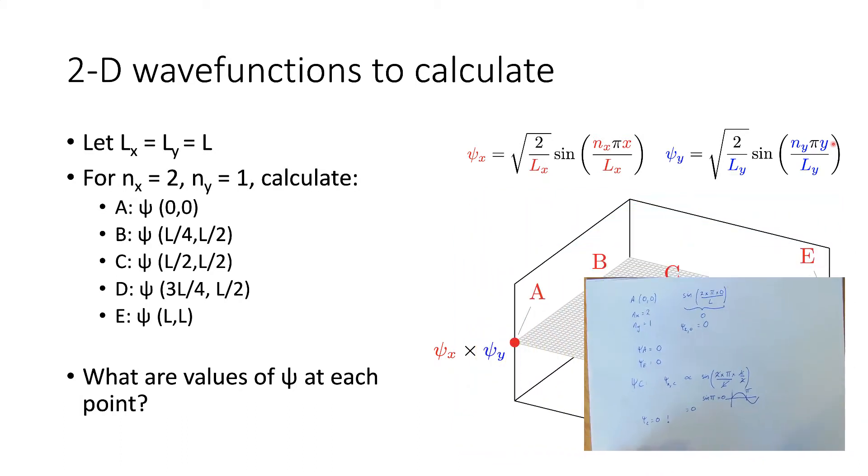So we would expect that our ψC to be equal to 0 as well. This seems surprising, but A, C, and E are all going to be 0. Well, let's look at what's happening to B and D.